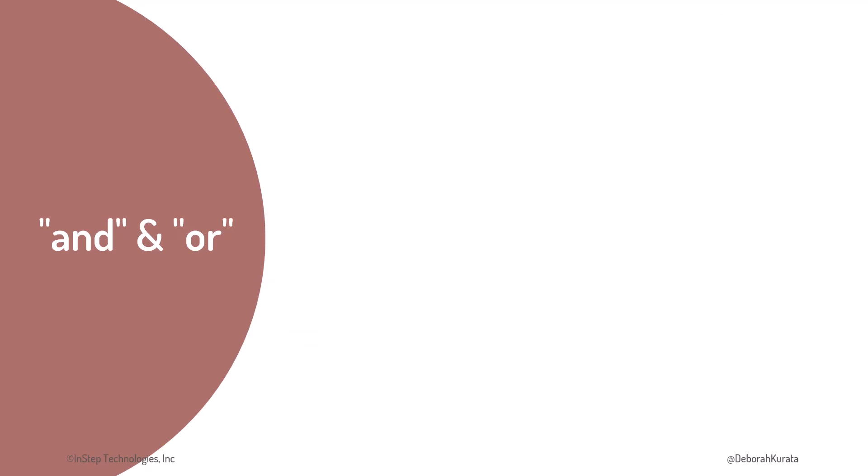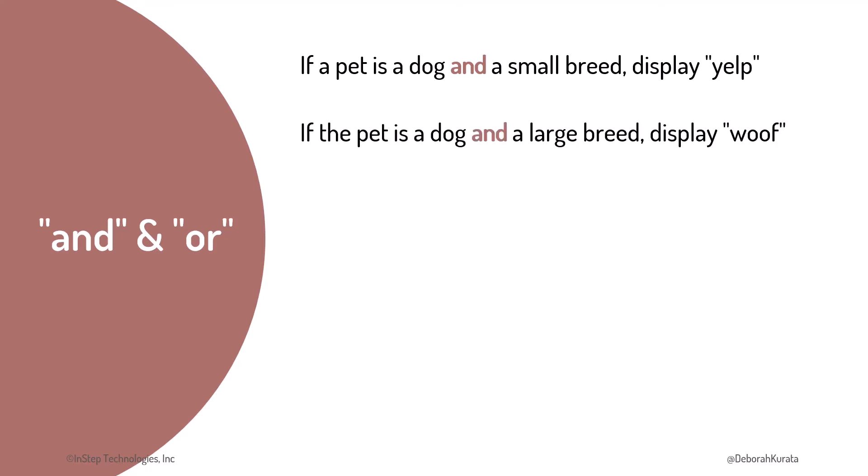In that case, we use and and or. For example, if a pet is a dog and a small breed, display yelp. If the pet is a dog and a large breed, display woof. If the pet is a dog or a cat, display grrrr.